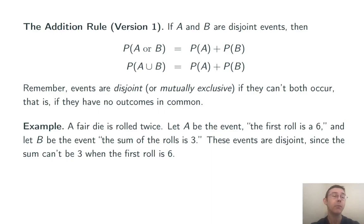So in order to compute the probability of A or B, that the first roll is a 6 or the sum of the rolls is 3, we just need the individual probabilities for those two events and then we need to add them. So in this case the probability that the first roll is a 6 is 1 in 6. Six possible outcomes there. One of which is in our event.